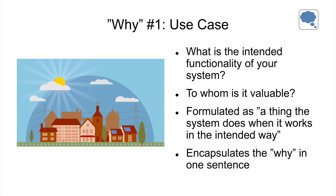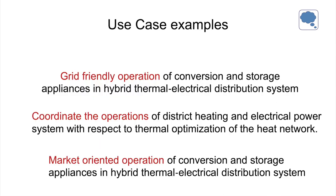The use case essentially says: what is the intended functionality of your system, and to whom is it valuable? A use case is formulated as a thing the system does when it works in the intended way — not how the simulation works, but what the system does given it's running perfectly. The idea of a use case is to encapsulate the why in one sentence. Examples from project partners include: grid-friendly operation of conversion and storage appliances, coordinating operations of district heating and electrical power systems, or market-oriented operation of conversion and storage appliances.